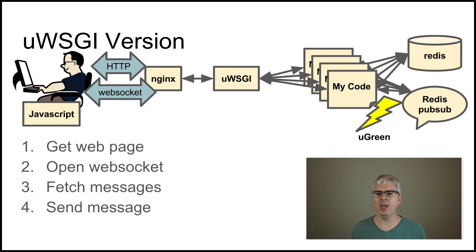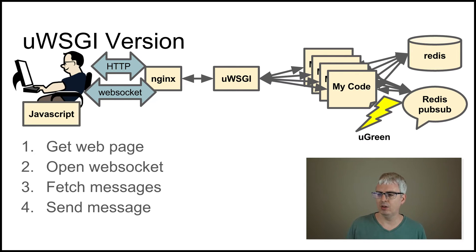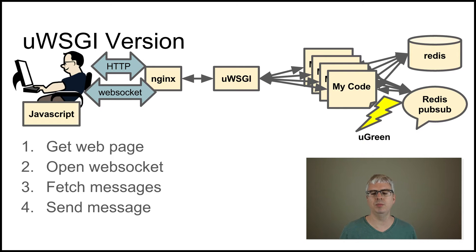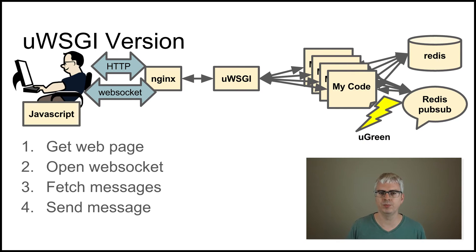The Redis pub/sub mechanism tells all sleeping threads 'hey, you've got a message — please send this back to your respective clients.' So the Redis pub/sub mechanism acts as a sort of in-memory echo server: it gets a message and immediately echoes it back to all the other threads that are waiting for a message. And that is how our uWSGI chat system works.